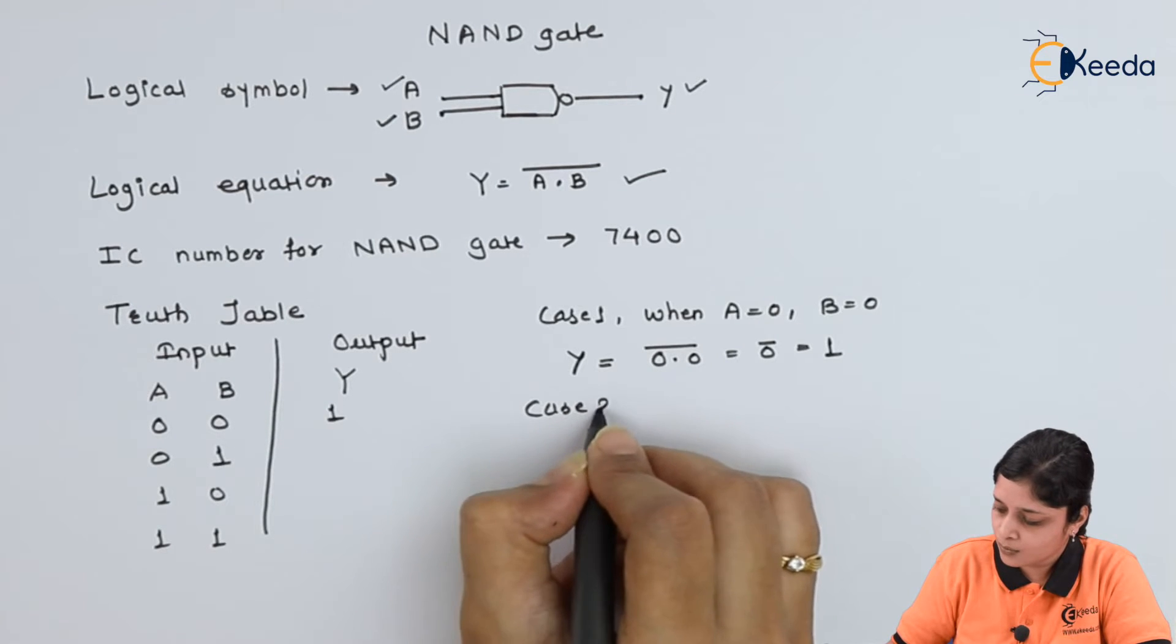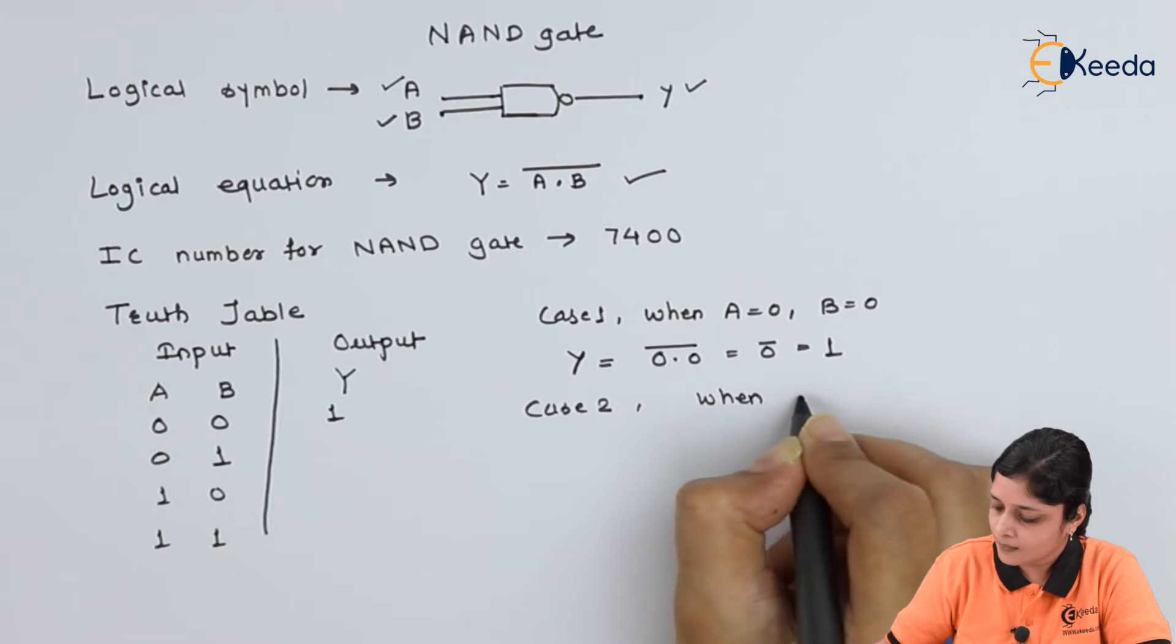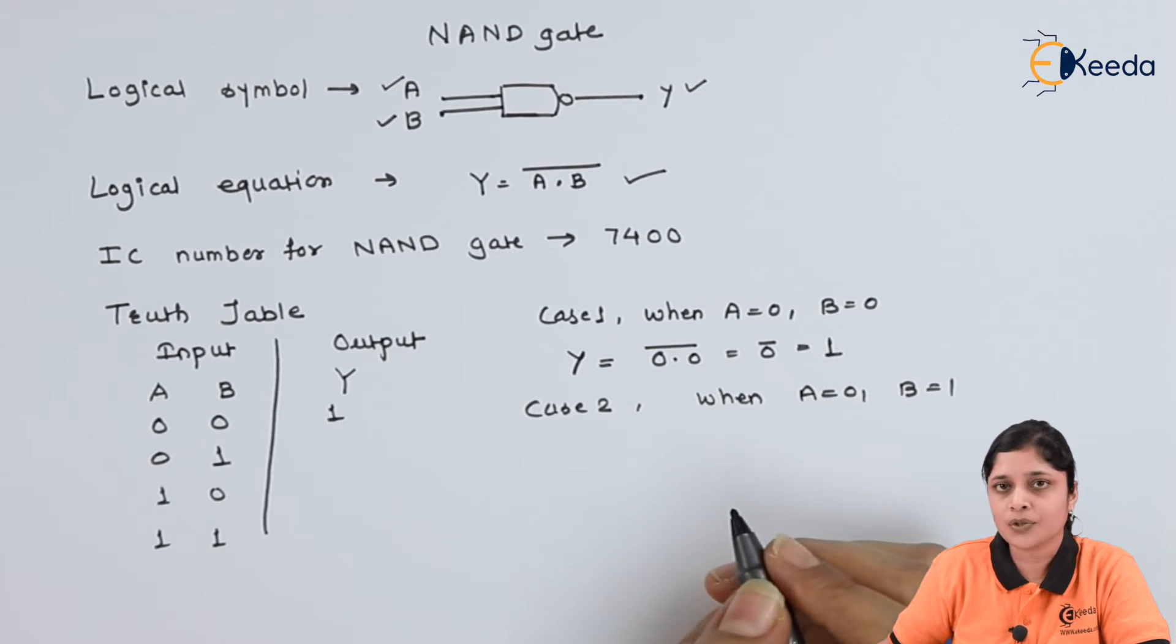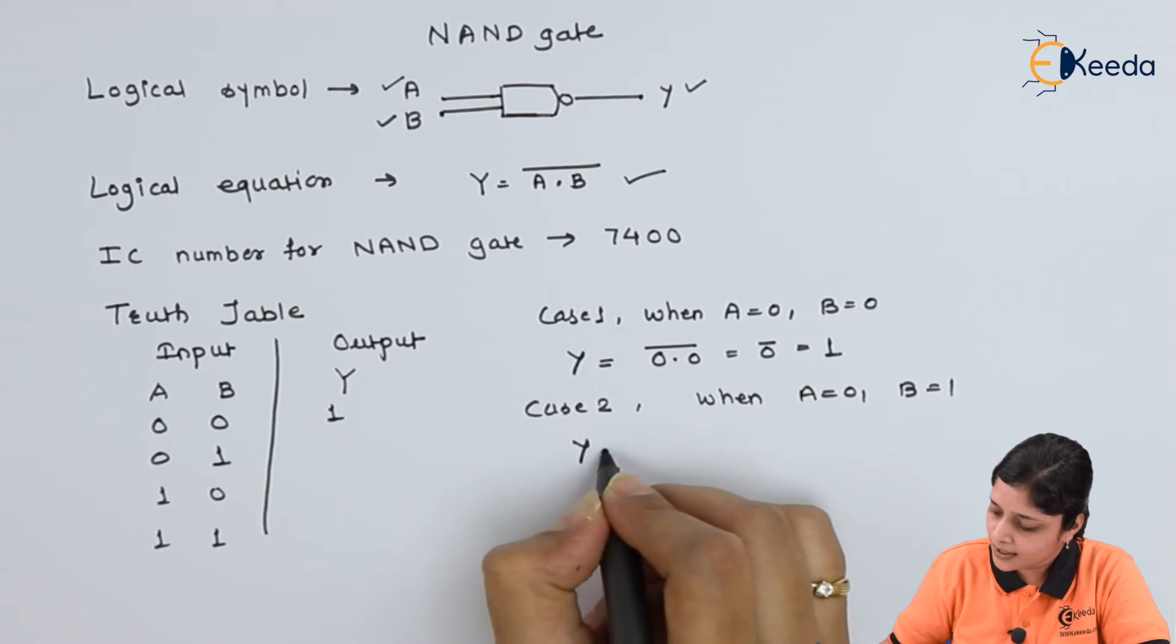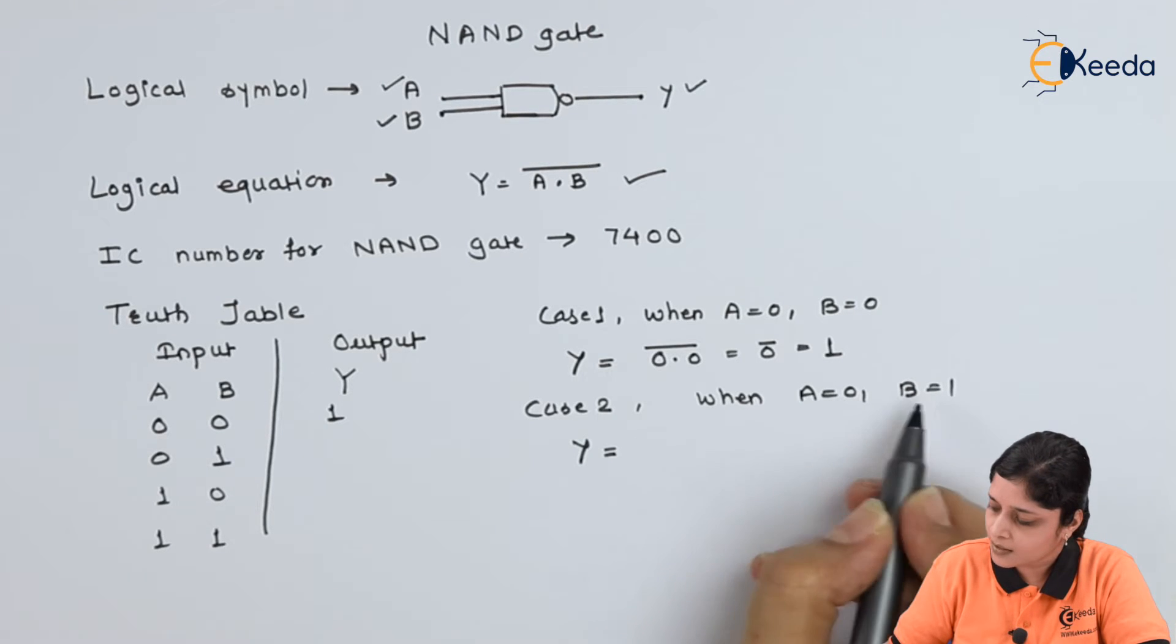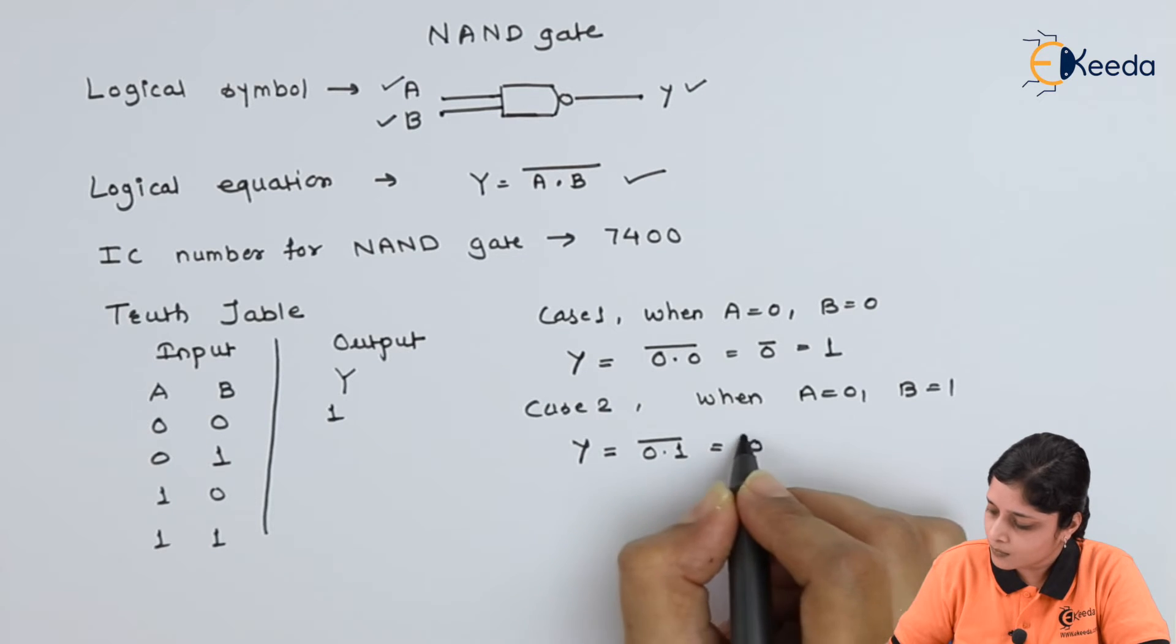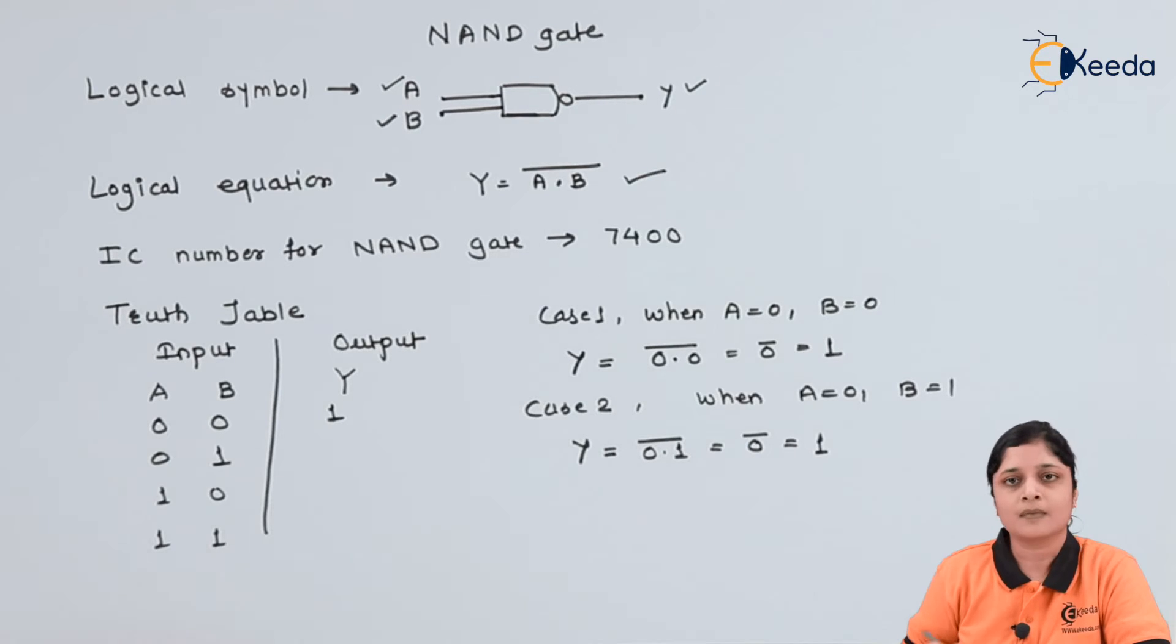Case 2: when A equals to zero, B equals to one, you will get Y equals to zero dot one is zero bar is one. Complement of zero is always one.